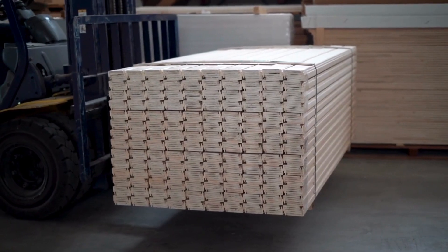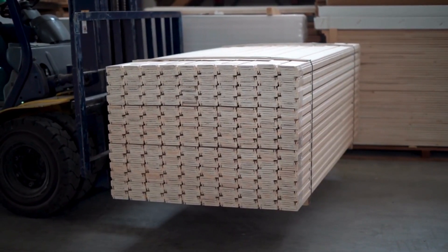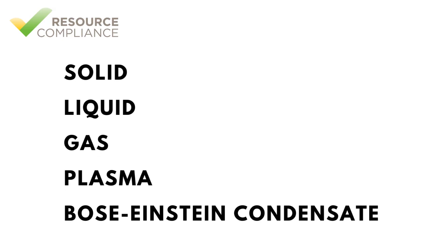Technically, there are five states of matter: number one, solid; number two, liquid; number three, gas; number four, plasma; and number five, Bose-Einstein condensate. Items four and five on that list are not relevant to our study of refrigeration fundamentals, so we'll focus our attention on the first three states of matter listed.